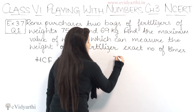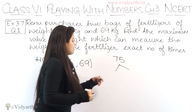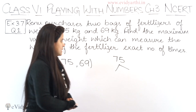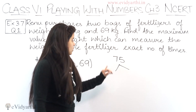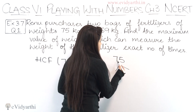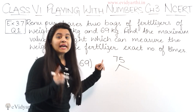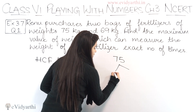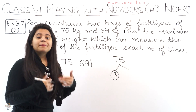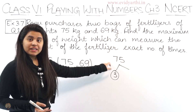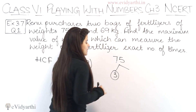Let's first find the factors of 75. To find the factors of 75, we can first check if it is divisible by 2 — nahi hoga. So we add its digits: 7 plus 5 equals 12, which means it is divisible by 3. So 3 is a factor of 75.